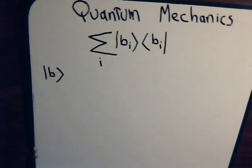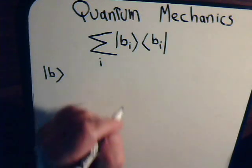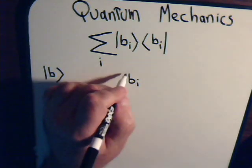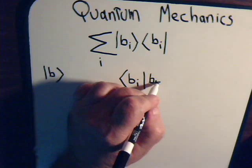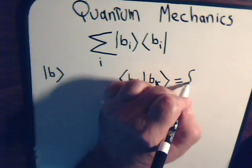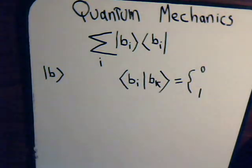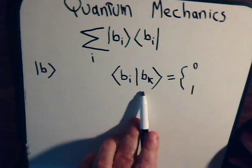And you see we're using just standard bra-ket notation as we will in all of our videos. So if these are not just basis vectors but an orthonormal set of basis vectors, so that the inner product of two of them either equals zero or one.